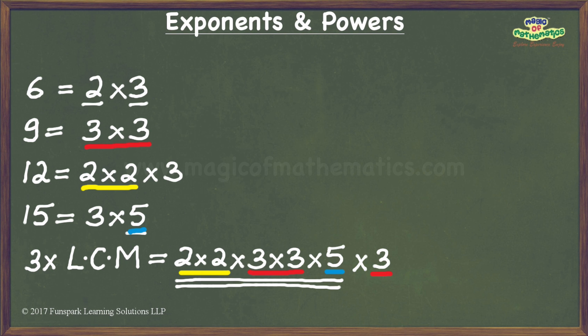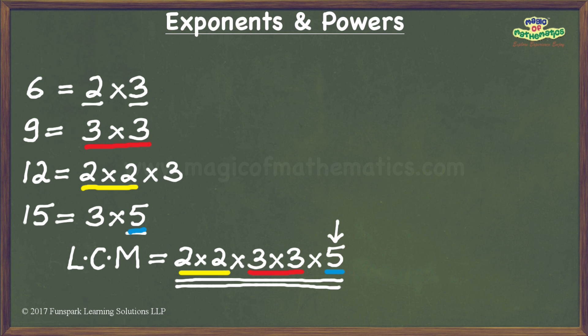The next multiple of the LCM, namely 4 times the LCM, has two additional 2s in its prime factorization, and these two form a pair. But we still have an unpaired 5, so this will also not work. The next multiple, namely 5 times the LCM, finally supplies the 5 required for the 5s to pair up. We now have a product which will give us the least perfect square that is exactly divisible by the given numbers.